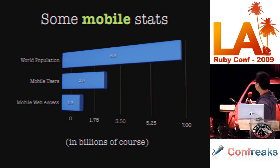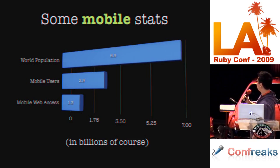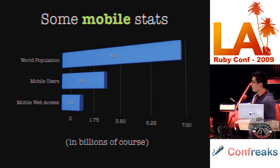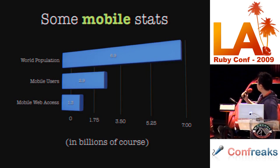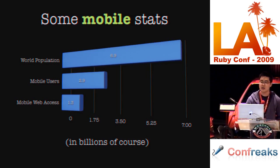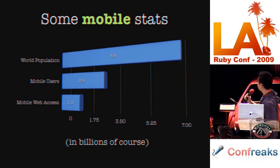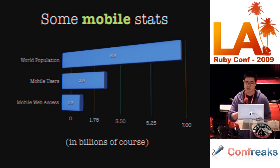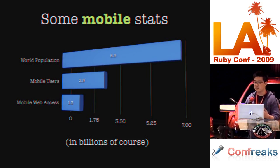Here are the mobile stats. I'm using this graph in the keynote. You can see: world population is about 7 billion, mobile users 2.9 billion, and those with mobile web access 1.3 billion. These stats are from late 2008, so the numbers have likely gone up since then.